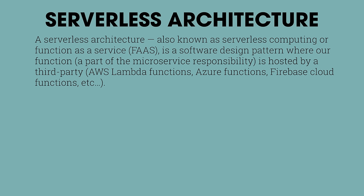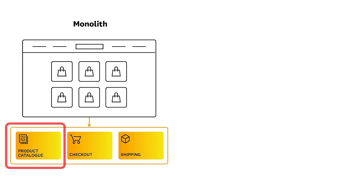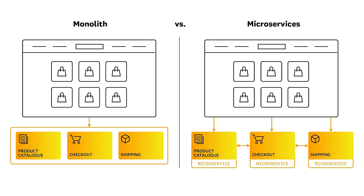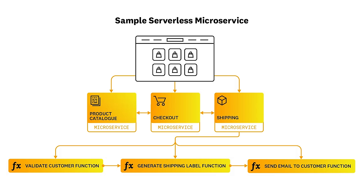Where there is monolithic architecture and microservice architecture, there is also something called serverless architecture, also known as serverless computing or function-as-a-service. It's a software design pattern where a function — which is a part of the microservices responsibility — is hosted by a third party. This is your AWS Lambda functions, your Azure functions, and your Firebase Cloud functions. Let me give you one more example as if you were online shopping. You have a product catalog, a checkout system, and a shipping process. In a monolithic application, all of those are built and deployed as one holistic unit. In a microservice application, each individual component is broken down into its own service — and a benefit here is that each microservice can have its own language, its own libraries, and typically its own database.